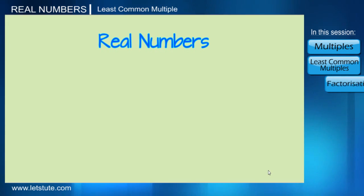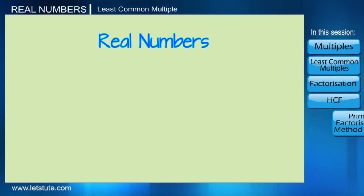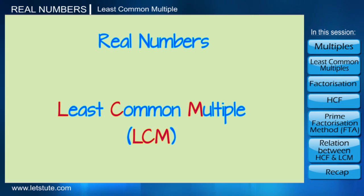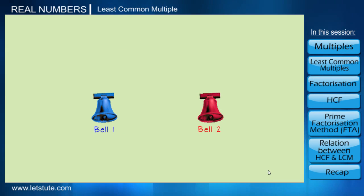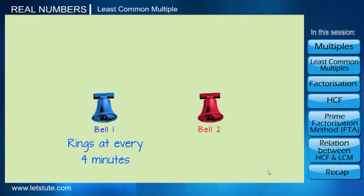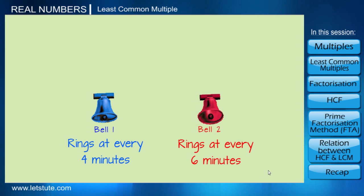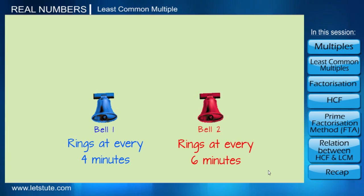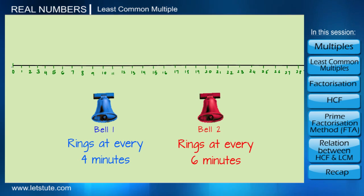Hello everyone, today we are going to learn a very important concept of mathematics: least common multiple. Let me first discuss a situation where there are two bells — the first bell rings every four minutes and the second bell rings every six minutes. The question is: at what time will they both ring together?